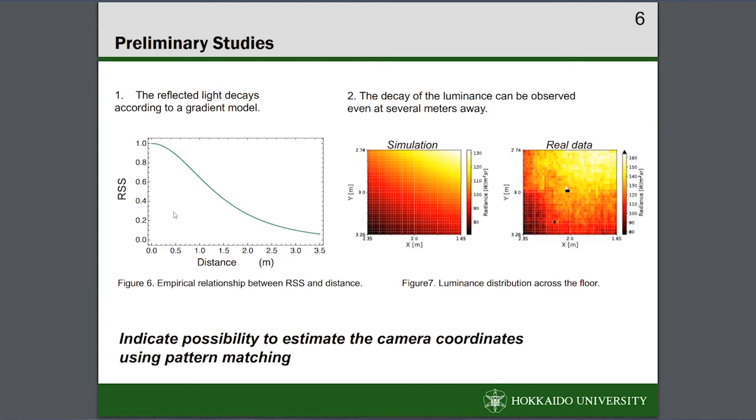The second: the decay of the reflected light on the floor can be observed even at a distance of several meters from the point directly under the LED. These two observations indicate possibility to estimate the camera coordinates using pattern matching.